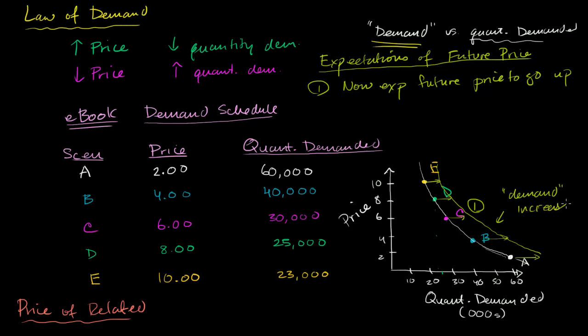And when we talk about demand, remember, and you're probably tired of me saying this, I'm not talking about a particular quantity. I'm talking about the entire curve shifting to the right, because people expect future prices to go up, so the current demand went up. The current demand curve shifted to the right.